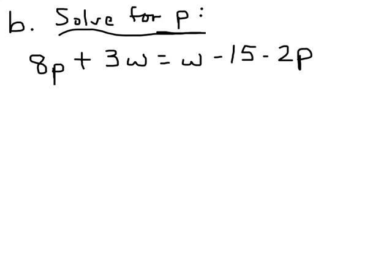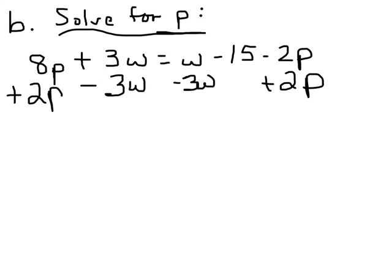Alright, next. This one says to solve for p. Alright, we've got 8p plus 3w. I need to move that 3w, so I'm going to subtract 3w. But over here I've got a negative 2p, and I want to move it to the left, so I'm going to add 2p to both sides.